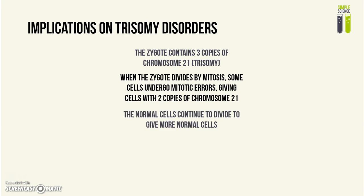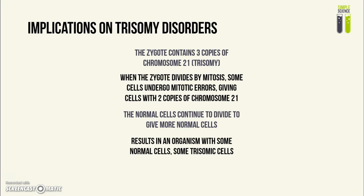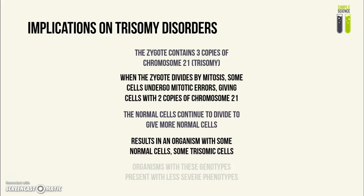The normal cells continue to divide to give more normal cells, and the cells with three chromosome 21s will also divide to give more of those. This results in an organism with some normal cells and some trisomic cells. Organisms with these two populations will present with a less severe phenotype than organisms that have 100% of cells with three copies of chromosome 21.